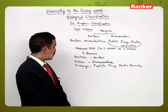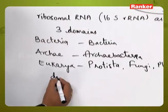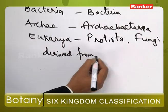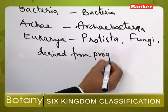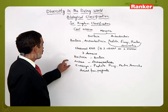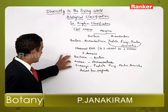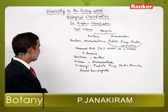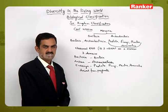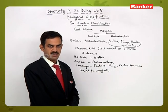These three domains are believed to be derived from a Progenote. Out of these three domains, Archaea is more closely related to Eukarya, whereas Bacteria is quite different from the other groups.